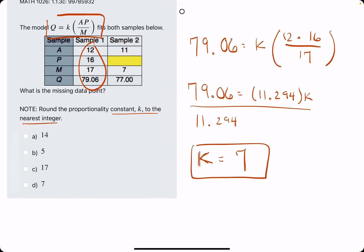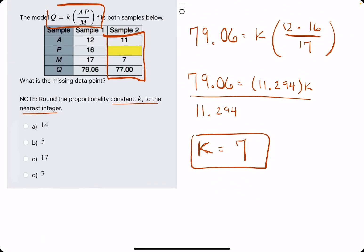Now that we have our K value, we move on to the Sample 2 values. And we plug in everything we know, including K equals 7, to solve for that empty P value.